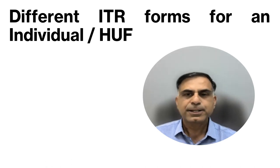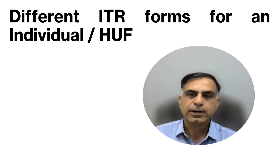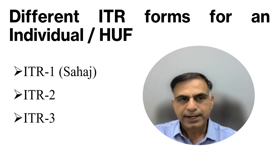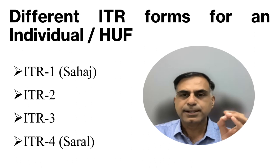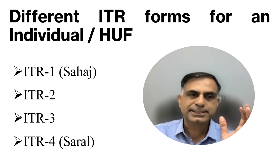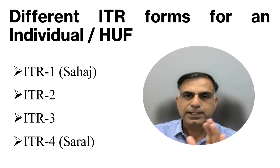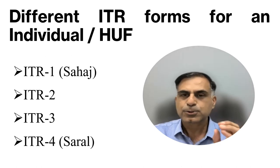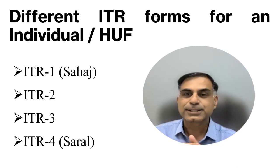The different ITR forms applicable for an individual or HUF may be ITR 1, ITR 2, ITR 3, or ITR 4. ITR 1 has a specific name called SAHAJ and ITR 4 has a specific name called SUGAM. Unfortunately, no name has been given to ITR 2 or ITR 3 by the Government of India, so you may decide a name on your own.